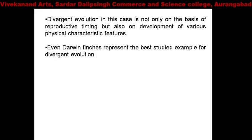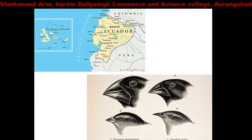Darwin's finches represent the best studied example of divergent evolution. Here we will discuss this with a figure. The figure shows adaptive radiation in Darwin's finches. It is a classical example of speciation involving radiation at the species level.